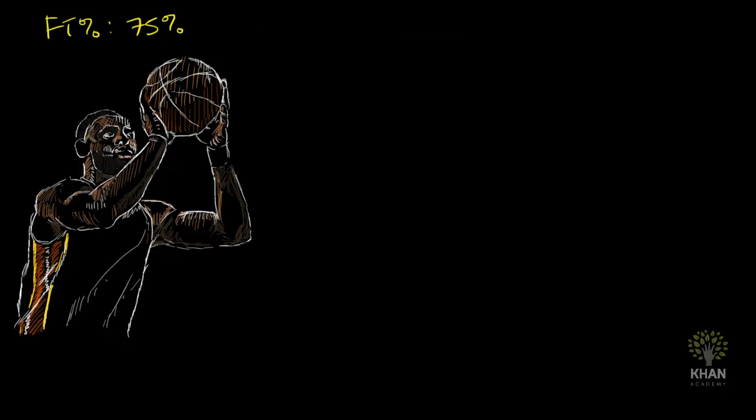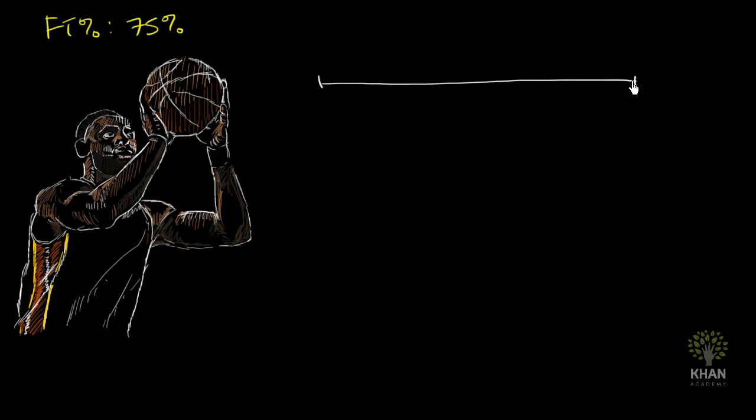One way to interpret that, if we have a million LeBron Jameses, you can imagine any large number of LeBron Jameses taking a free throw. So let's say that this line represents all of the LeBron Jameses that take that first free throw. Let's call that free throw number one. We would expect, on average, that 75% of them would make that first free throw.